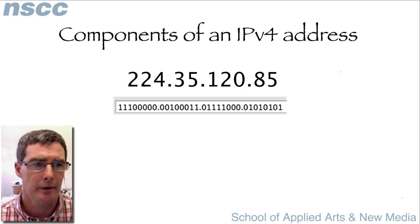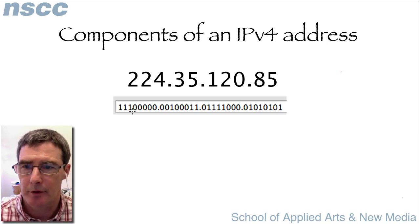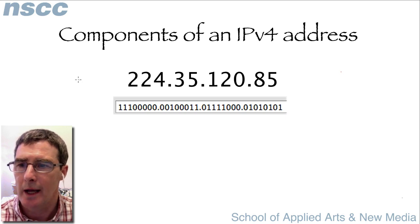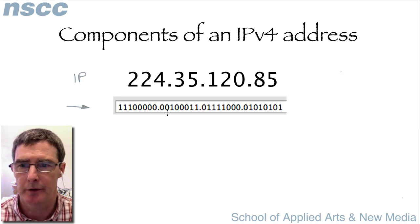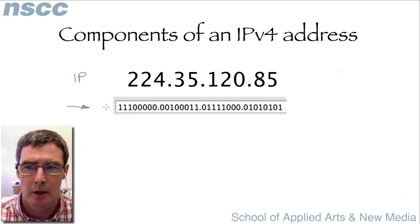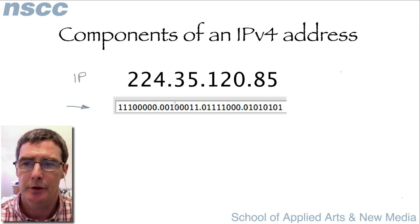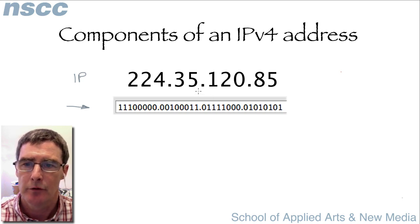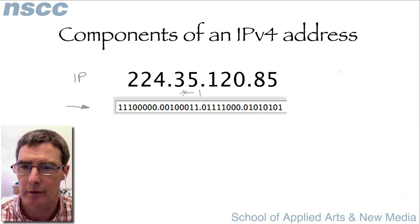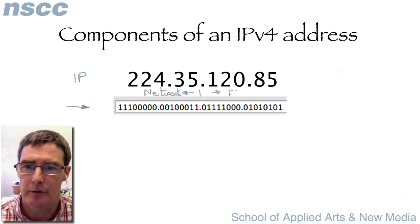How do we determine what part of the address is the network part and what part is the host part? We have an IP address and we'll break it down into binary — this is what a computer looks at. There is a division, like a line, where everything to the left is the network part, which is unchanging for all devices, and everything on the other side is the host part, which is unique to every device.